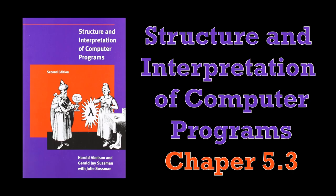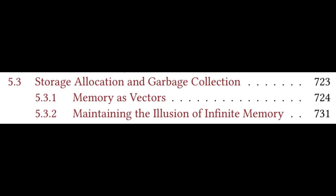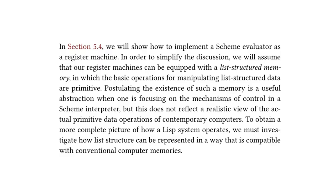Welcome to a Programming Languages virtual meetup pre-recording. My name is Conor Hookstra, and in this video we're going to be covering Chapter 5.3 of the Structure and Interpretation of Computer Programs. The chapter is titled Storage Allocation and Garbage Collection, and there are only two subsections: 5.3.1 Memory as Vectors and 5.3.2 Maintaining the Illusion of Infinite Memory. This is a shorter chapter, tied with the shortest at 18 pages with Chapter 4.2, so this will be a shorter video.